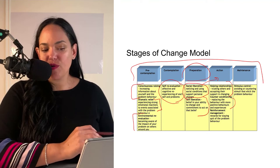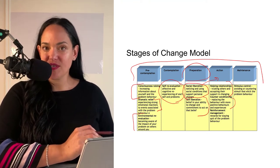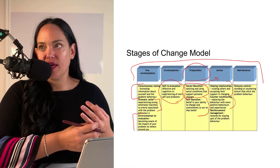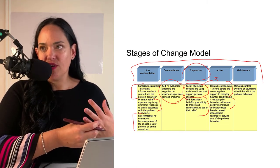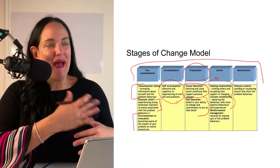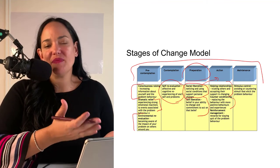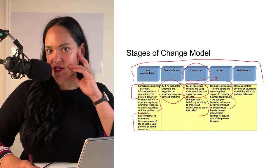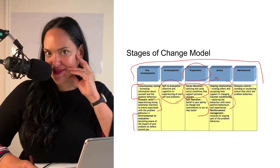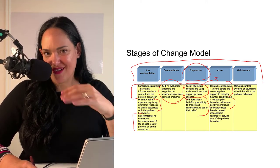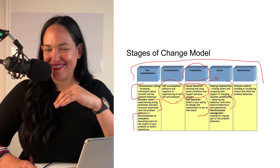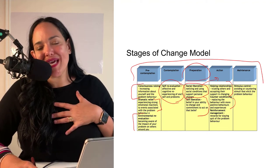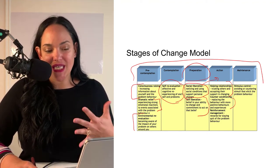Counter conditioning — replacing the behavior with more positive behaviors — can also help in the action stage. For example, instead of going out for a smoke, you do a walk around the block and pat yourself on the back for that. Reinforcement management: rewards can also help. We like rewards — dog does a trick, dog gets a treat; humans do a trick, humans get a treat. That works for a lot of people, although ideally we're building an internal locus of control where they don't necessarily need that external reward.